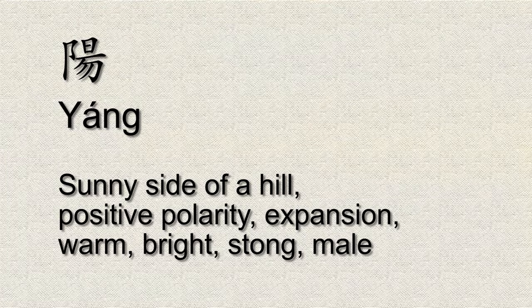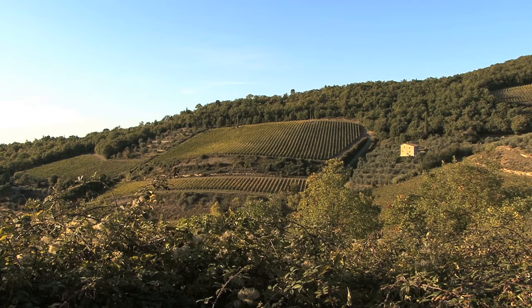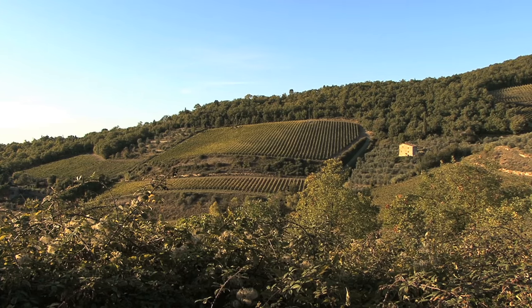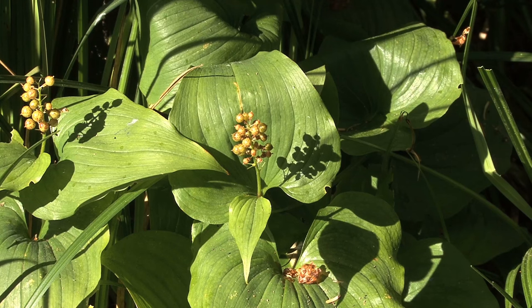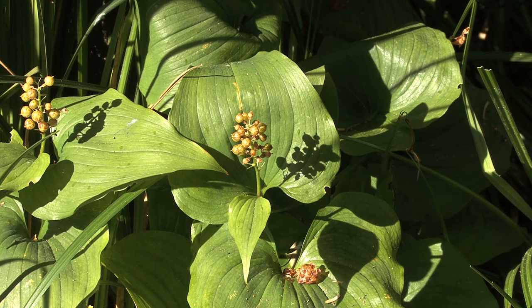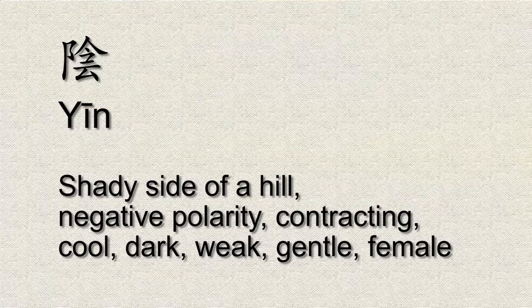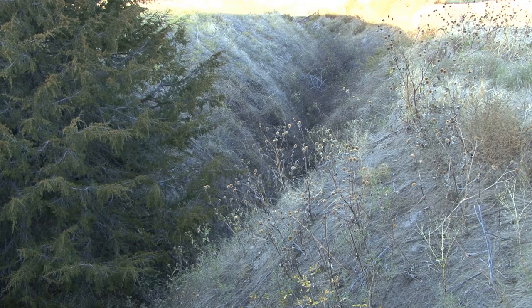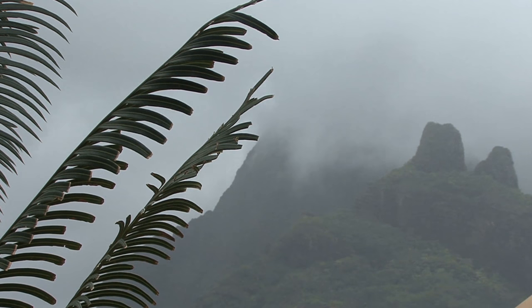Yang meant the sunny side of the hill — you can imagine the sunny side of the hill is brighter, warmer, with plants opening up to absorb the sunlight and growing outwards. Yin meant the shady side of the hill, where it would be darker, colder, and the plants and wildlife wouldn't be expanding out, but instead curling up to keep warm.